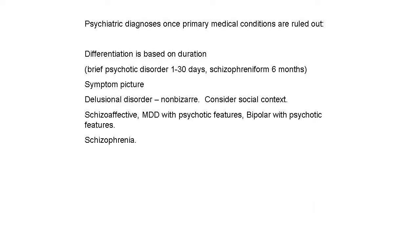Once primary medical conditions are ruled out, there are a number of different psychiatric possibilities when you see someone presenting with psychotic symptoms. The differentiation is based on duration and symptom picture. You start off in the first 30 days diagnosing brief psychotic disorder. For six months, it would be considered schizophreniform disorder. And then after six months, when it becomes apparent that the symptoms are fairly chronic, you would make a diagnosis of schizophrenia.